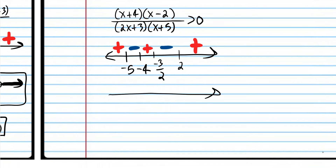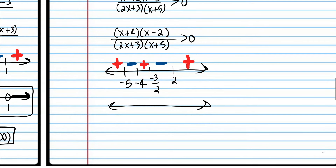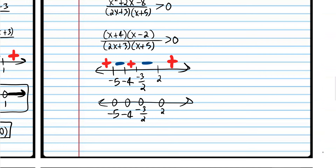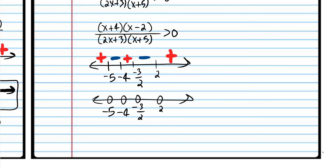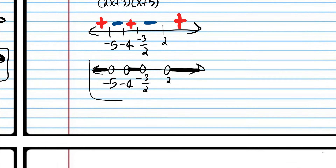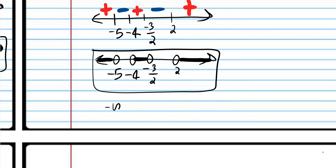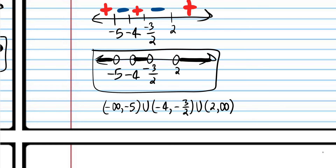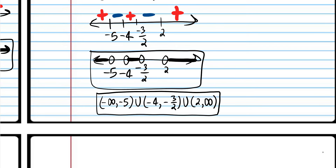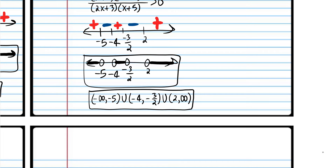Plug in three: positive — we plug in zero and get a negative — and plug in negative three or so and get a positive times a negative divided by a negative times a positive, which gives a positive. Plug in negative 4.5: we get a negative times negative divided by a negative times a positive — positive divided by negative — positive. Plug in negative six: negative times negative divided by negative times negative — positive. So the graphical solution has open dots for everything since it says just greater than, and we want the intervals with positive symbols. That is the graphical solution and the solution in interval notation.